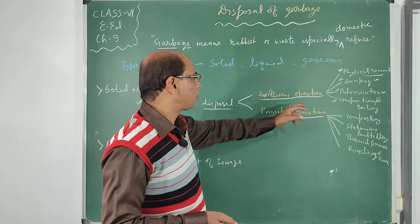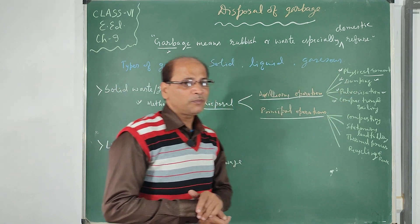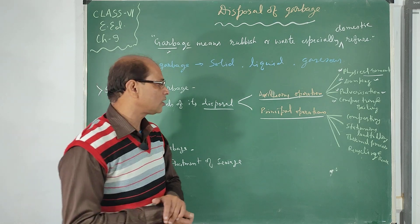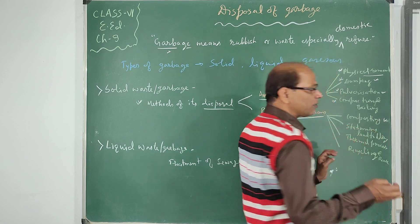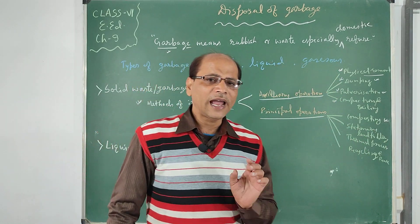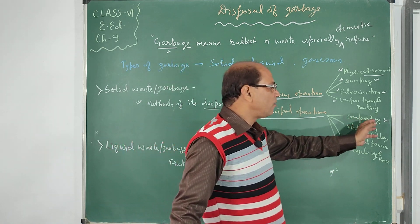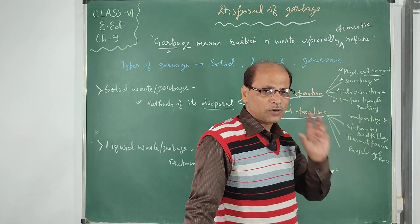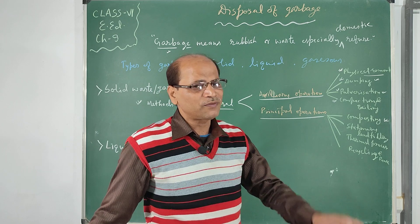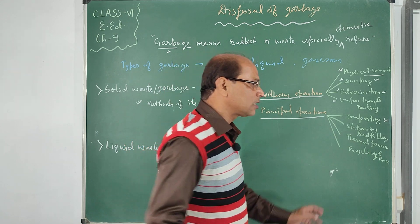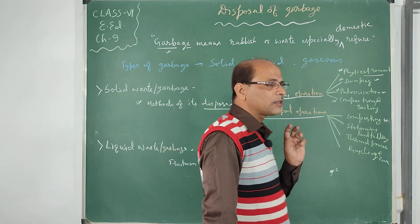These are the auxiliary operations for solid waste. Now, the principal operations of solid waste disposal. Composting: garbage which is biodegradable and of organic nature can be put into a compost pit for the composting process. Composting is the process by which we can make bio-fertilizer, which is very useful for farmers and crop fields.